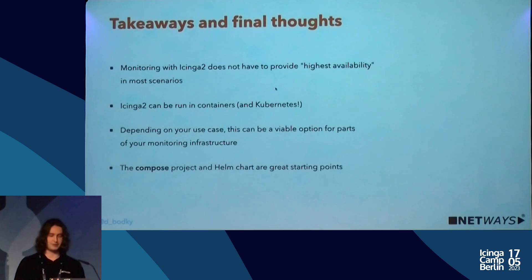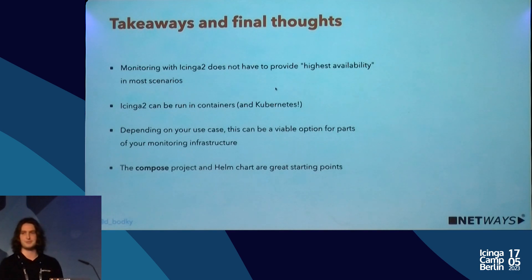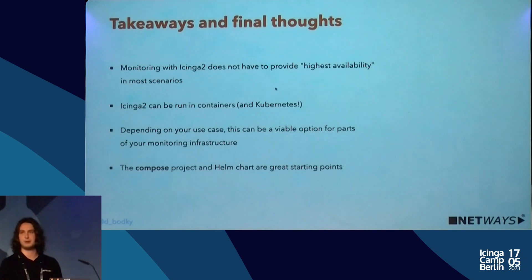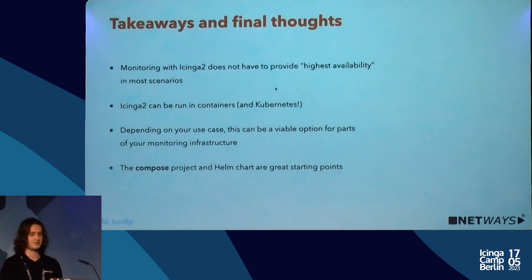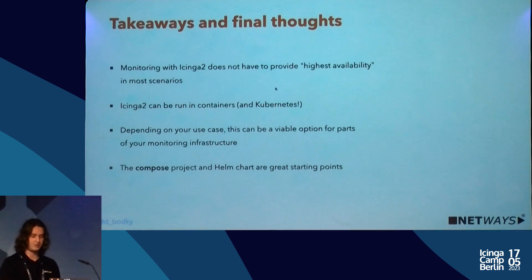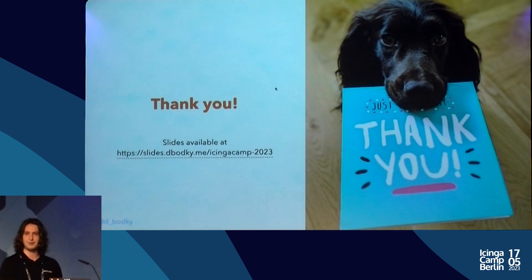Takeaways and final thoughts: monitoring with Icinga 2 does not always have to provide highest availability — sometimes it's just enough to react fast, quick, and seamlessly so nobody notices you were down. I think I just demonstrated this: we had minimal downtime, no human had to be called at 3 a.m., Kubernetes did all the heavy lifting. You can definitely run containers and Kubernetes. Containers are a bit more mature than the Kubernetes part I just demoed, but we'll get there. Depending on your use case, this can be a very viable option for at least parts of your monitoring infrastructure. Get started with the Compose project or the Helm chart — please try it out, give feedback, contribute, open issues. Thank you.